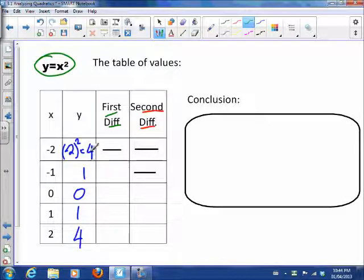So the difference from 4 to 1 is negative 3. 1 minus 4 is negative 3. 0 minus 1, that first difference is negative 1. 1 minus 0, that first difference is 1. 4 minus 1, that first difference is 3. So you see now that the first differences aren't all the same.